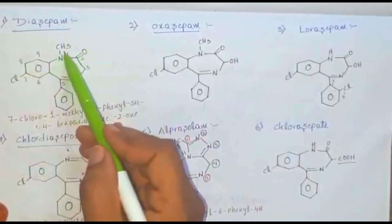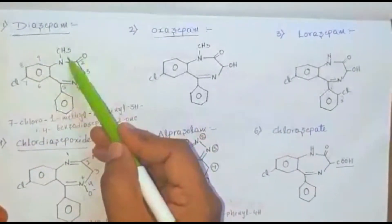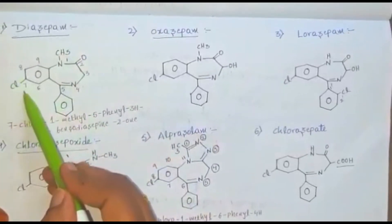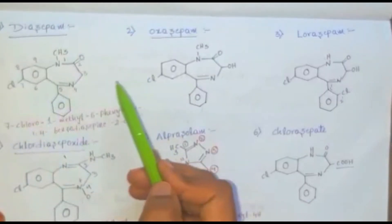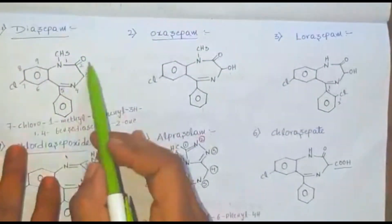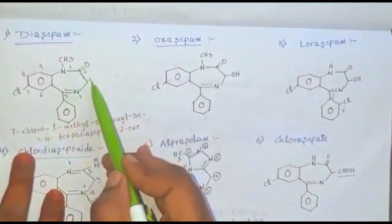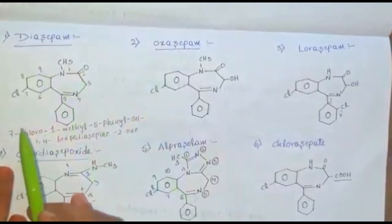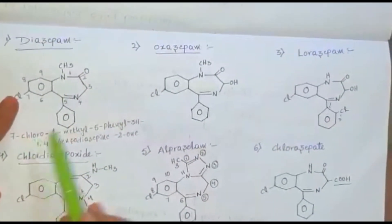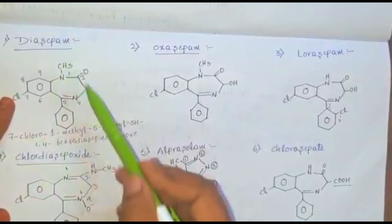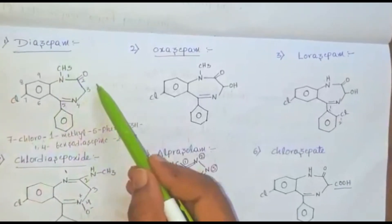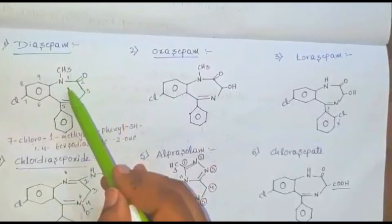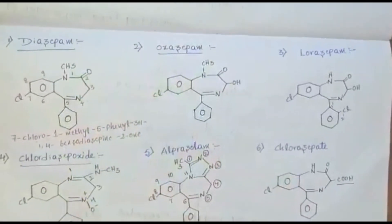In diazepam, a methyl group is substituted at the first position, a phenyl ring is substituted at the fifth position, and a chlorine group is substituted at the seventh position. The ring numbering is 1 through 9. The nomenclature is 7-chloro, 1-methyl, 5-phenyl, 3H-1,4-benzodiazepine-2-one. This is called diazepam.